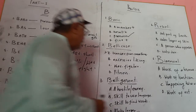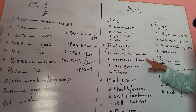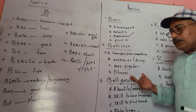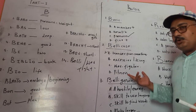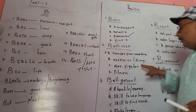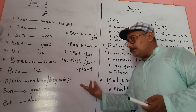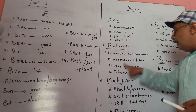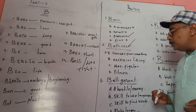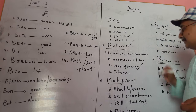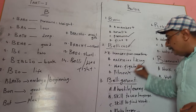Looking at the options for 'bellicose': transfer from something — this could not be the meaning. Excessive liking — could not be. Option C — war or fighter — yes, that is correct. 'Bellicose' means war or fighter. Option D — fitness — no, it cannot be. So the correct option is C.